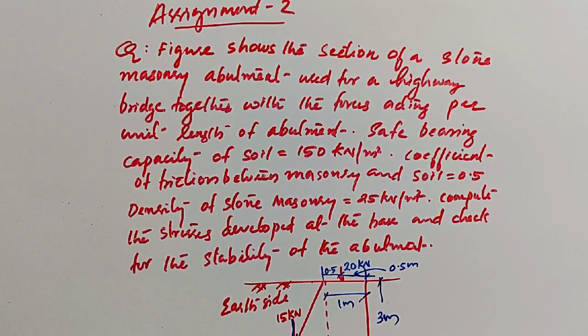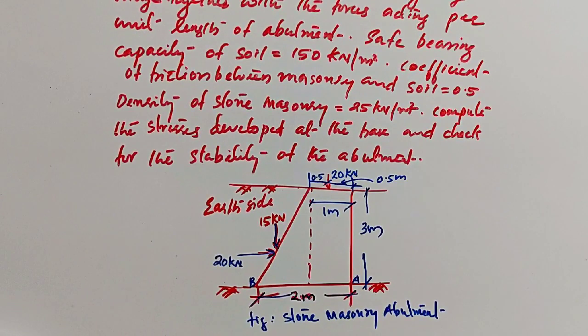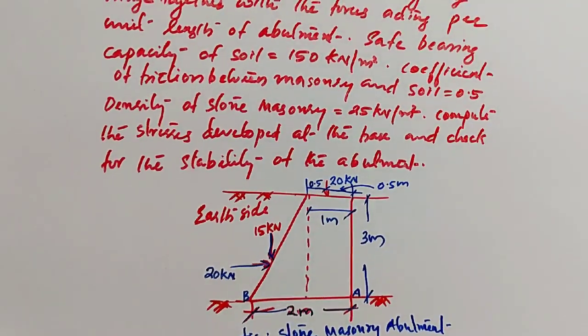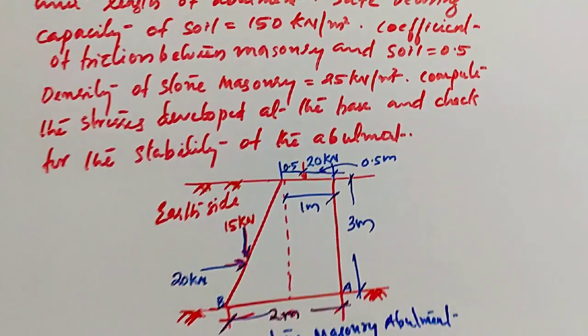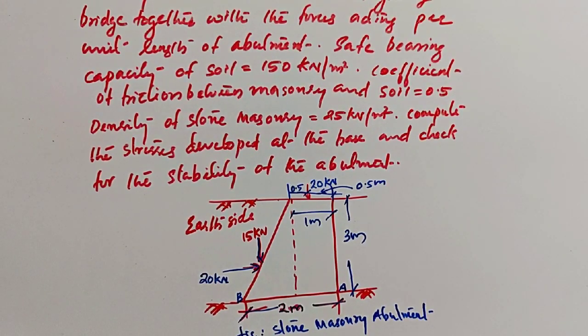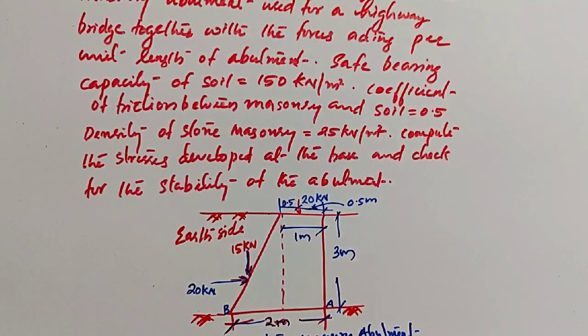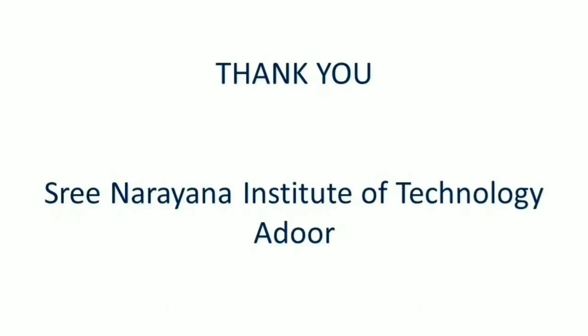An assignment for you. The question: Figure shows the section of a stone masonry abutment used for a highway bridge together with forces acting per unit length of abutment. Safe bearing capacity of the soil is 150 kilonewton per meter cube, and the coefficient of friction between the masonry and soil is taken as 0.5, and density 25 kilonewton per meter square. Then compute the stresses developed at the base and also check the stability of the abutment. The figure shown below, it is very clear: vertical load, horizontal load, dead load, and live load there, and the dimensions are very clear. Please do it and submit. For more references, refer these textbooks of design of bridge. Thank you.